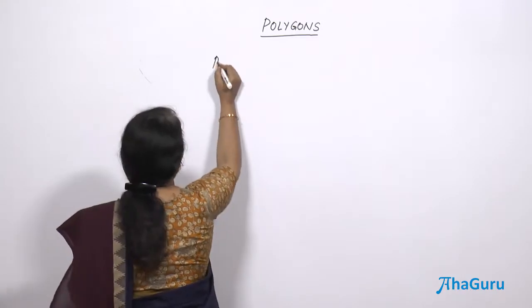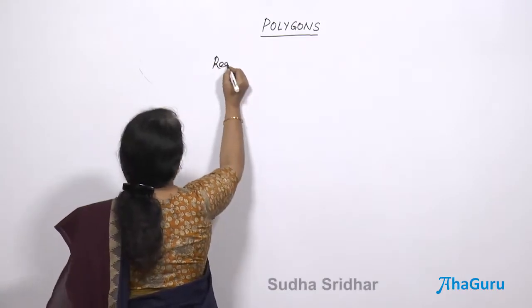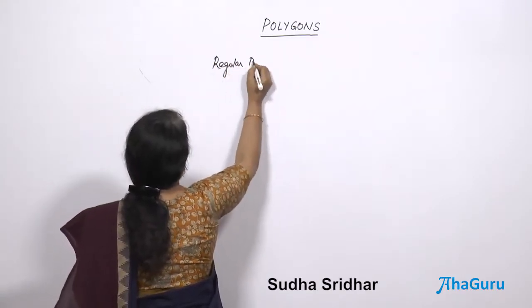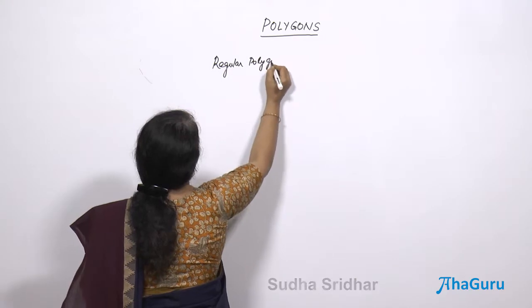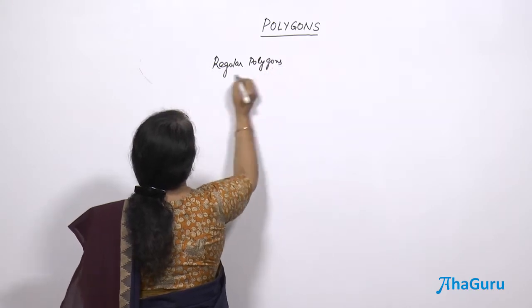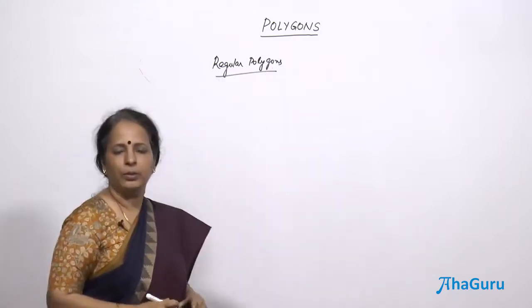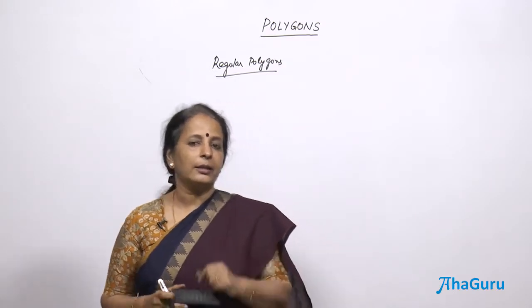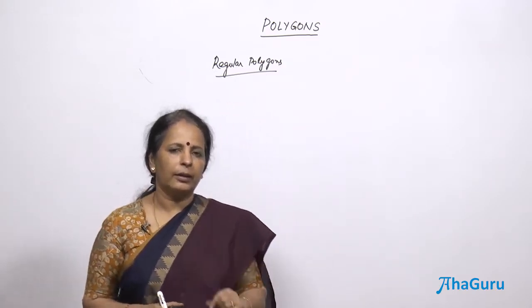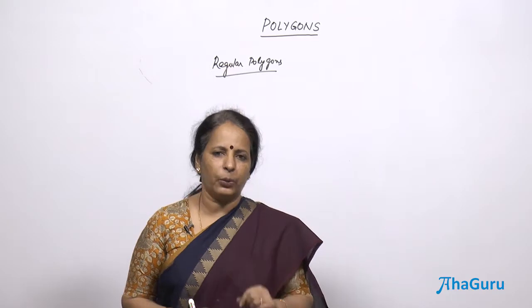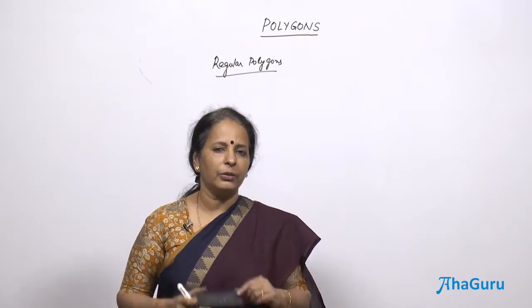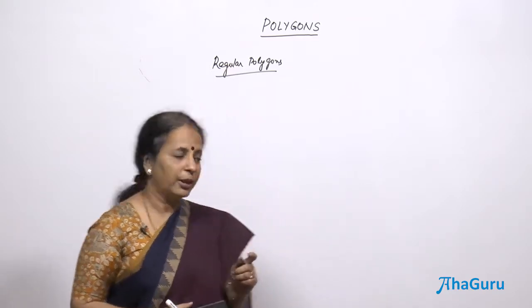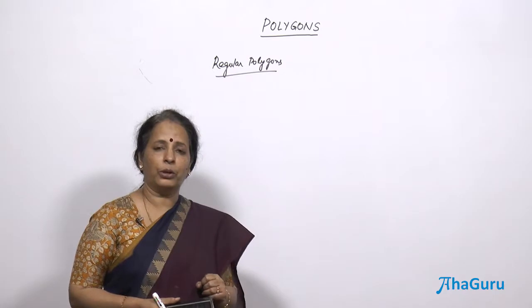Now, let us learn what is known as a regular polygon. This was general polygon. What do you mean by regular polygon? This is the word you will regularly see in your books. A regular triangle is an equilateral triangle. A regular quadrilateral is a square. If I just give you these two hints, you should be able to give me an idea of what does it mean by regular polygon.